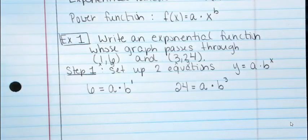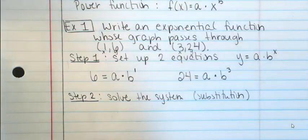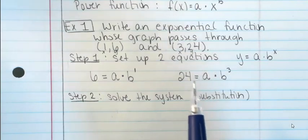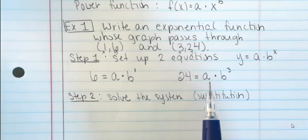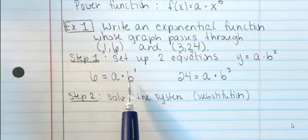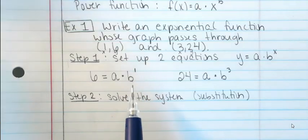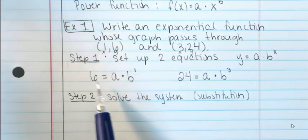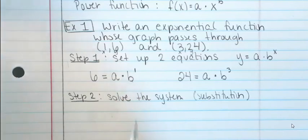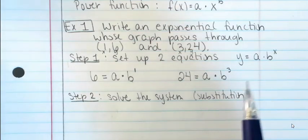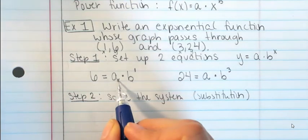Using combinations on this would be really challenging because of the exponents. The better way is to use substitution. Step two: solve the system using substitution. Look at the two equations and ask which variable is easier to solve for. Ideally, one equation has a small exponent — even zero is great. This first equation is going to be easier to work with, so I'll solve it for a.